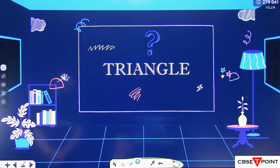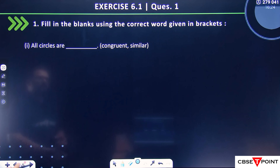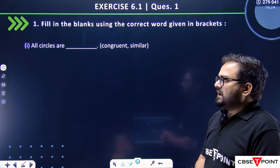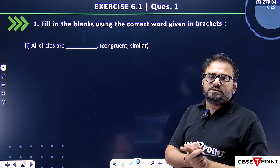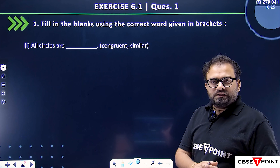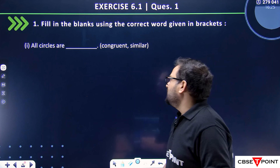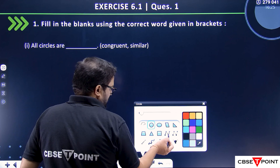Welcome to Class 10, Triangle chapter, Exercise 6.1. In this exercise we will see the question statement: fill in the blanks using the correct word given in the bracket. In the bracket there are some words and you have to fill in the blanks. I want to tell you that you can see all the concepts — I have already discussed them. Come and read the statement: all circles are — in the bracket — congruent or similar.